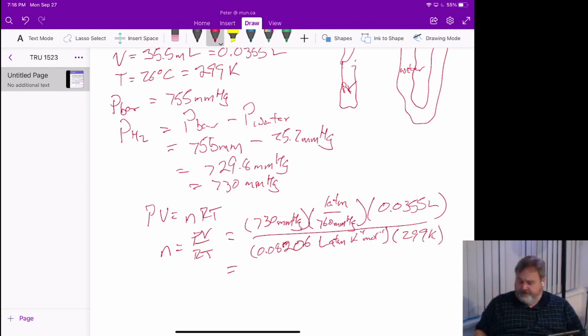730 divided by 760, times 0.355, divided by 0.08206, divided by 299, and I am getting 1.39 times 10 to the minus 3 moles.